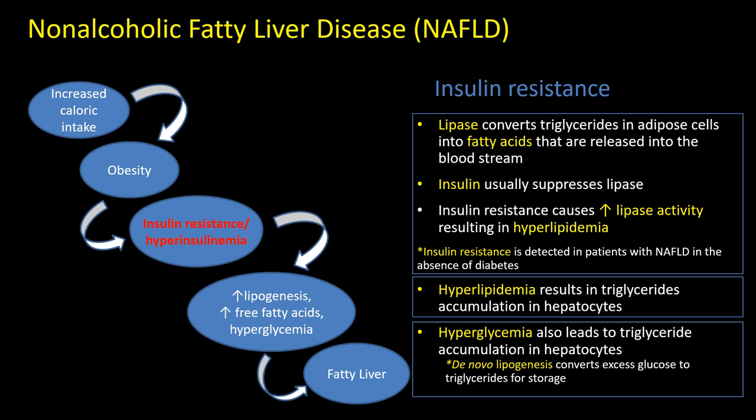When we think about non-alcoholic fatty liver disease, we can think of it in a stepwise progression. Increased caloric intake is the largest risk factor, leading to obesity. Obesity causes insulin resistance and hyperinsulinemia, which then triggers lipogenesis, increased free fatty acids, and hyperglycemia. As we reviewed earlier, this leads to fatty liver, ballooning of the hepatocytes, hepatocyte damage, and eventually fibrosis.